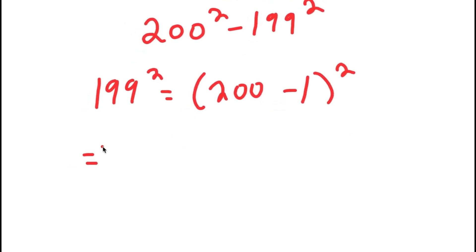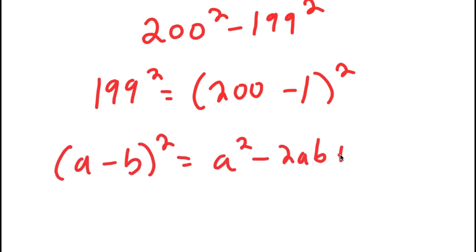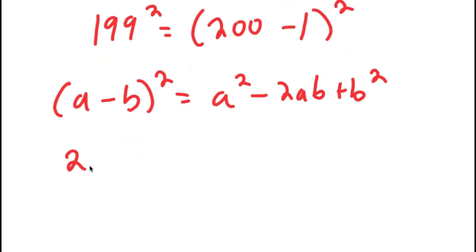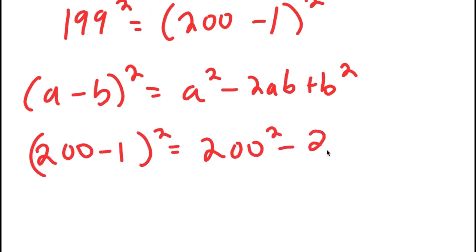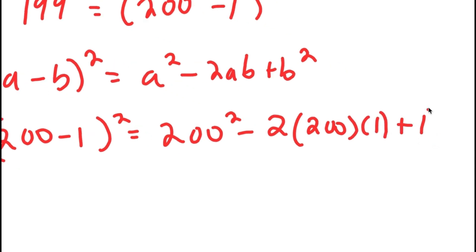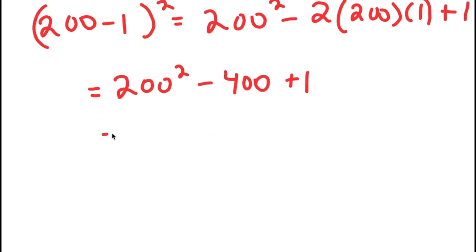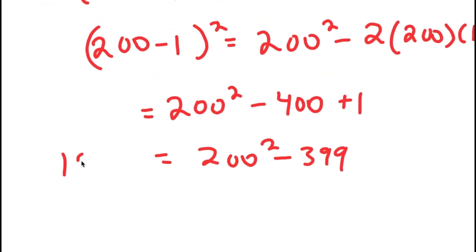If I have something in the form a minus b, quantity squared, this is equal to a squared minus 2ab plus b squared. So 200 minus 1, quantity squared, is equal to 200 squared minus 2 times 200 times 1 plus 1 squared. This is equal to 200 squared minus 400 plus 1, which equals 200 squared minus 399. So this is the value of 199 squared.